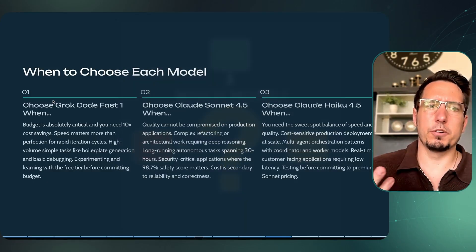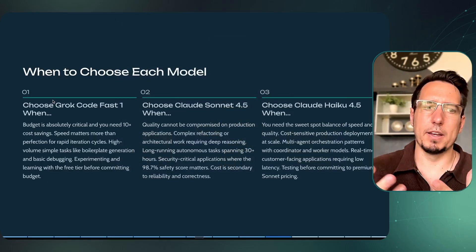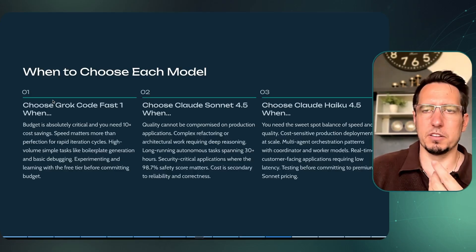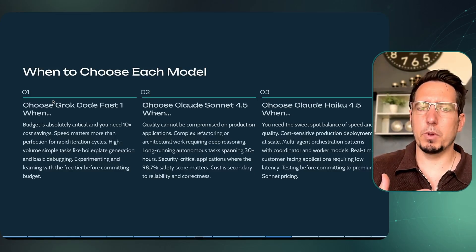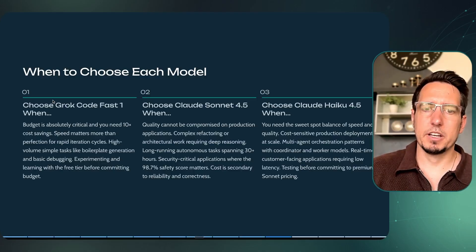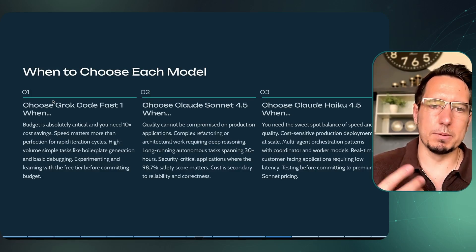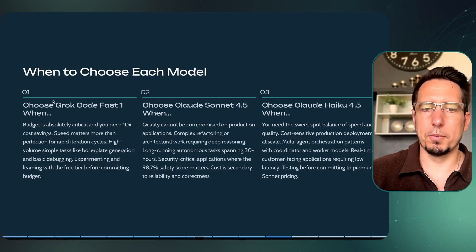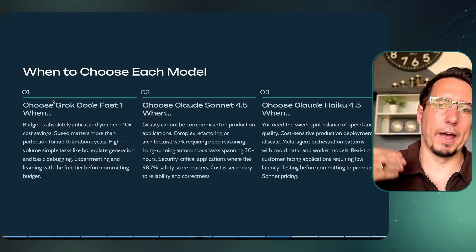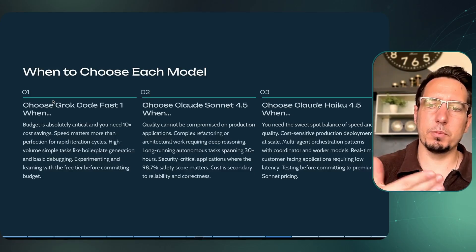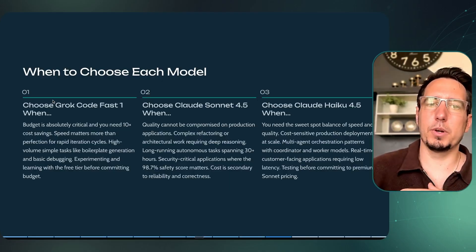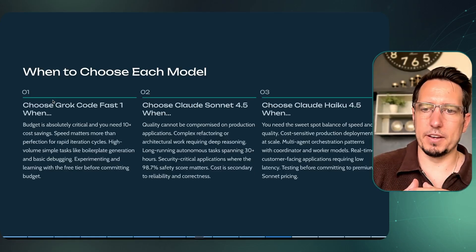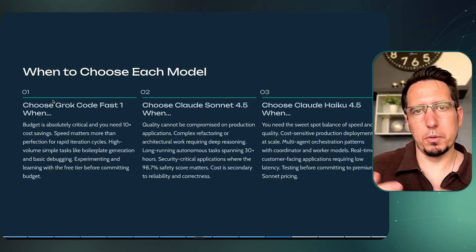When should you choose each model? Choose Grok Code Fast if you're on a budget, need that 10x cost saving, and speed matters more than perfection for rapid iteration cycles. Choose Sonnet 4.5 when quality can't be compromised and cost isn't a factor — complex refactoring, architectural work requiring deep reasoning, or long-running optimization tasks. Choose Haiku 4.5 for cost-sensitive production deployments at scale where you want consistency but can accept slightly lower accuracy than Sonnet. It's also really good at multi-agent orchestration patterns, even better than Sonnet 4.